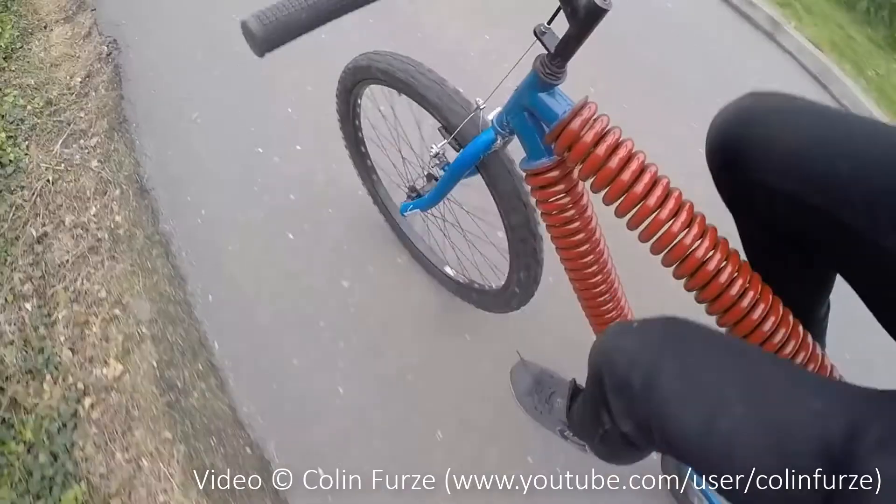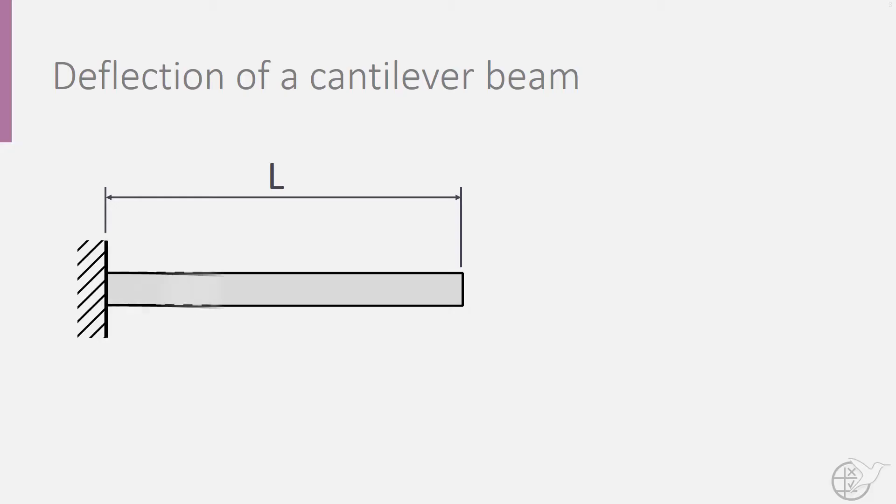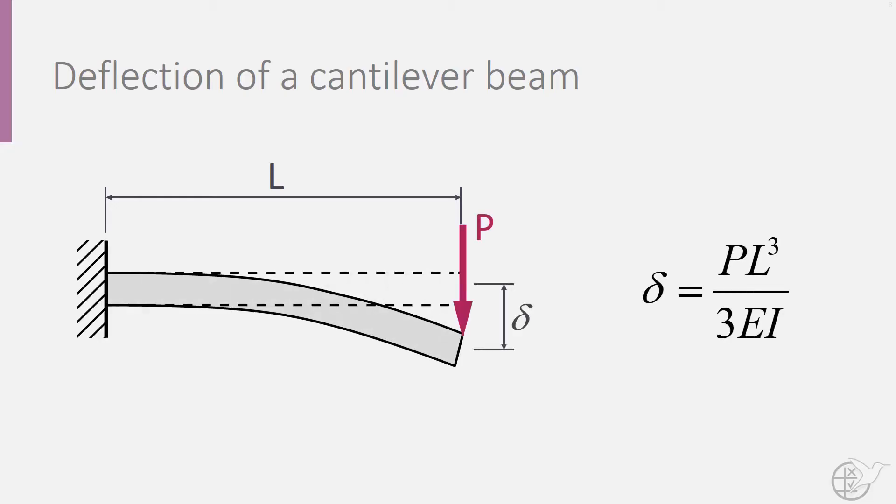So for our characteristic equation, we need to look at the bending deformation of a beam. Bending deformation is actually quite a difficult topic that is beyond the scope of this introductory course. To avoid unnecessary complication, I will provide you with this formula for the end deflection of a cantilever beam subjected to a point load P.